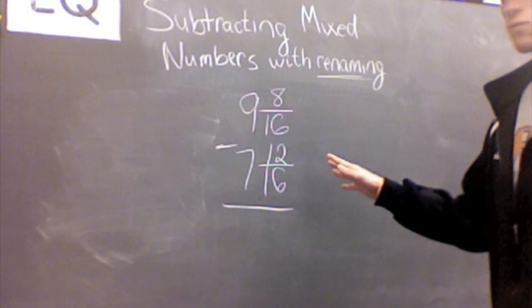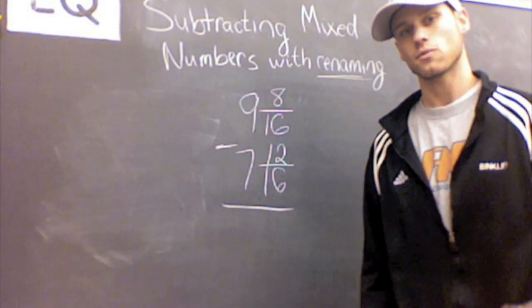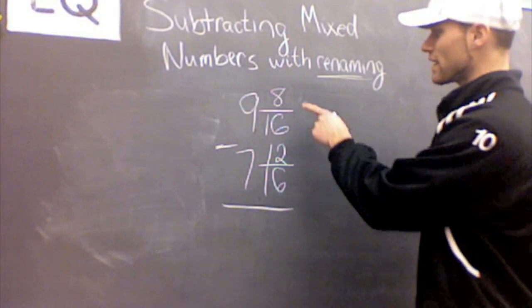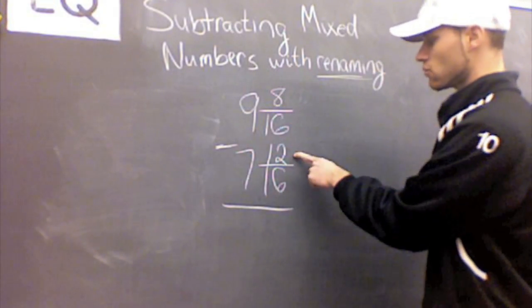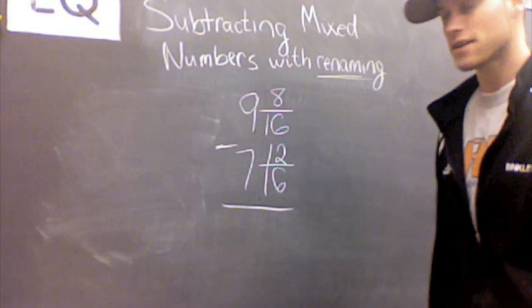Now we're left with 9 and 8 sixteenths minus 7 and 12 sixteenths. We still try to subtract those fractions, but we now can't take 8 minus 12. So we know this isn't going to work out. So we're going to have to regroup or rename.